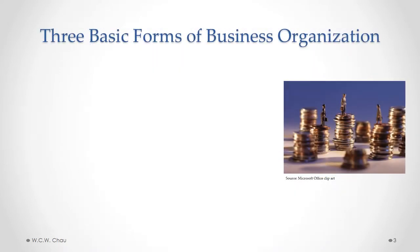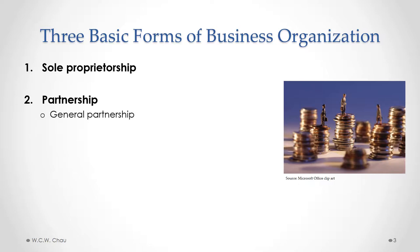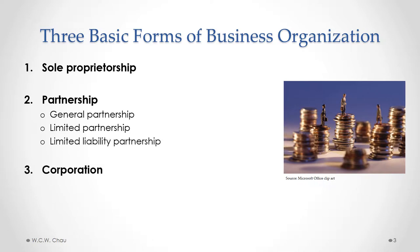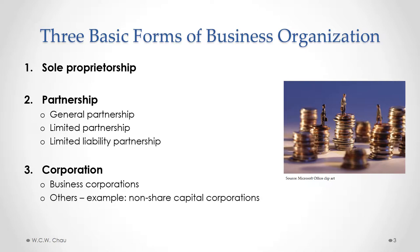In this module, we will look at the three basic forms of business organization. The most basic one is the sole proprietorship, and then we'll look at the partnership and the various different types of partnership, which are the general partnership, the limited partnership, and the limited liability partnership. The last form we'll look at is the corporation, or specifically business corporations. There are other types of corporations such as non-share capital corporations used by not-for-profit or charitable organizations, but we'll focus on only business corporations.